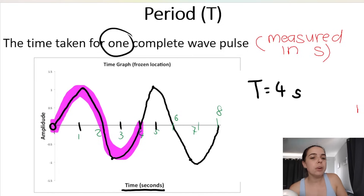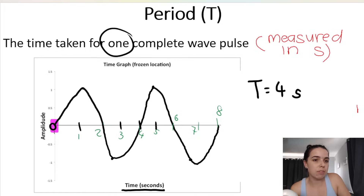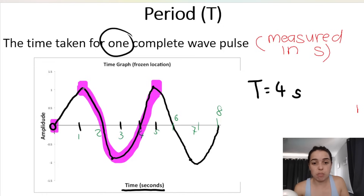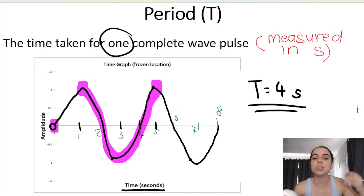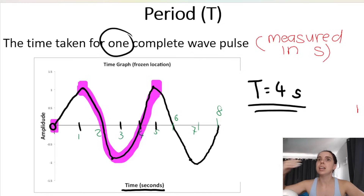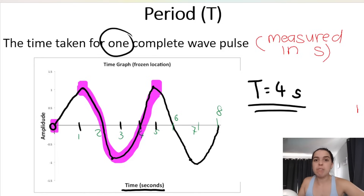Another way to find the period is crest to crest. This crest is at one second and this crest is at five seconds. How long does it take to get from one to five? It is four seconds. So the period of the wave is four seconds. If the period is 10 seconds, it means one wavelength takes 10 seconds to pass. A period of 0.5 seconds means one wavelength passes very quickly — that's a short period.